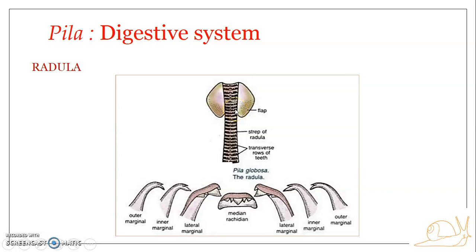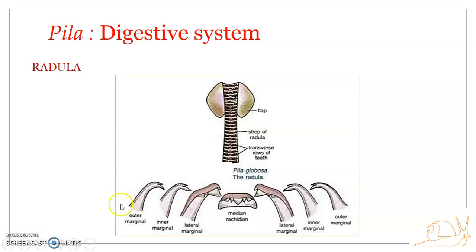Each row contains seven teeth: one median or central tooth called the rachidian, one lateral on either side, and two marginals on either side. So the dental formula of the radula is: 2 marginal, 1 lateral, 1 median (rachidian), 1 lateral, 2 marginal — that is 2-1-1-1-2.